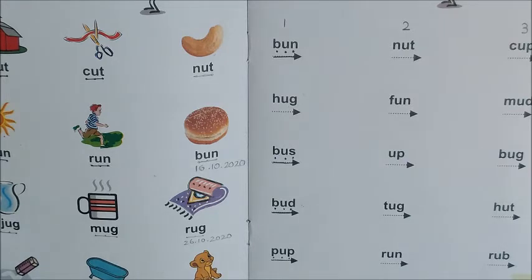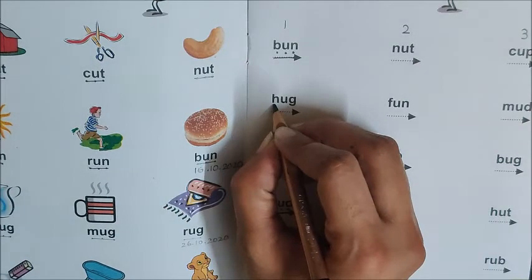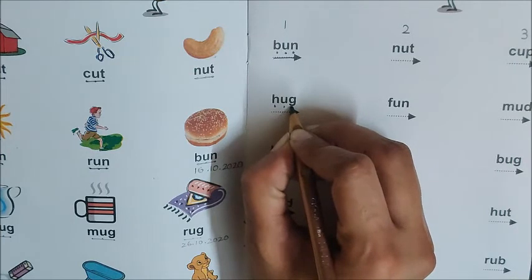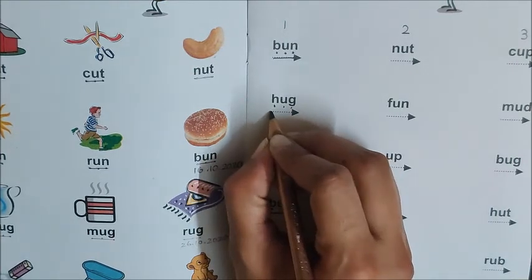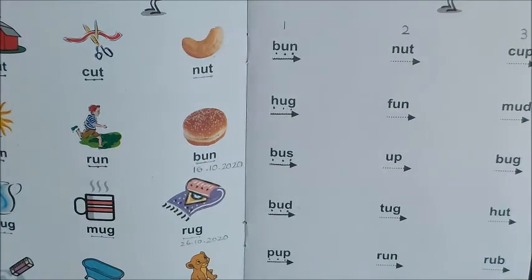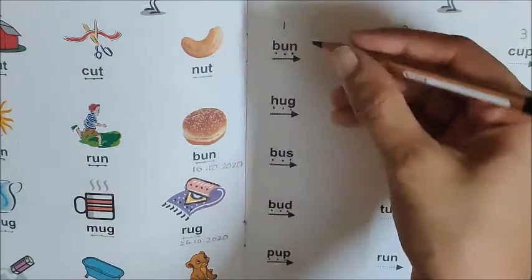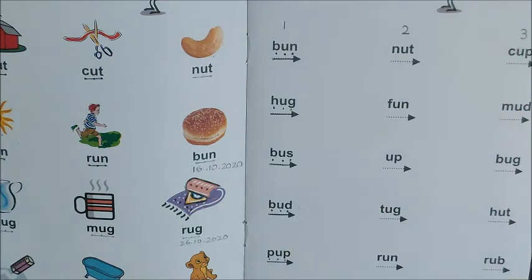Now your last word is hug. Where is it? Now it is simple to find the word hug. It is here — only this word is left in column 1. Mark the sounds: H, A, G. Join and read — H, A, G — hug. Hug means gale lagna. And children, I am glad that you found all the words. Now give a tight hug to your mama or your papa or the person who is sitting with you and helping you in reading.